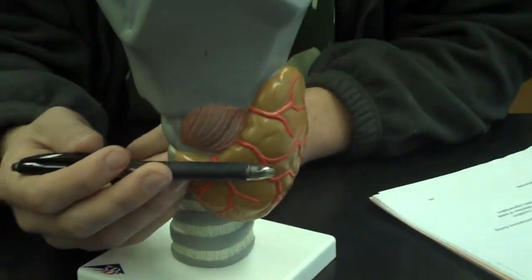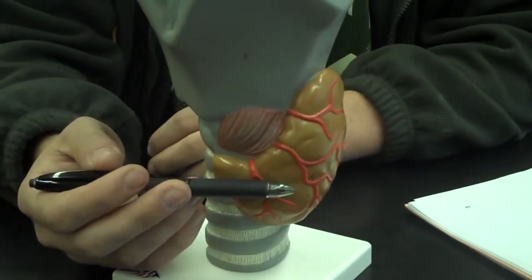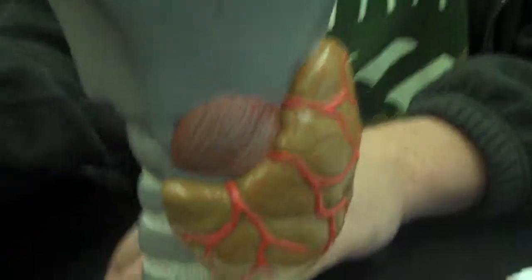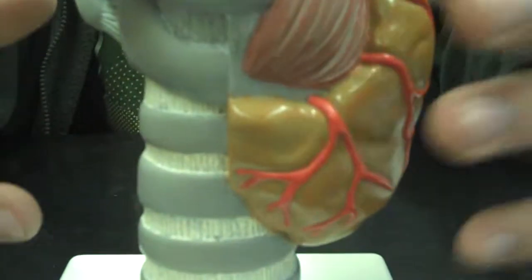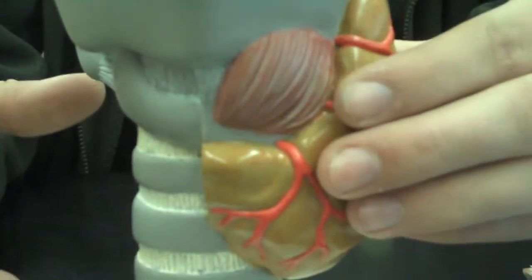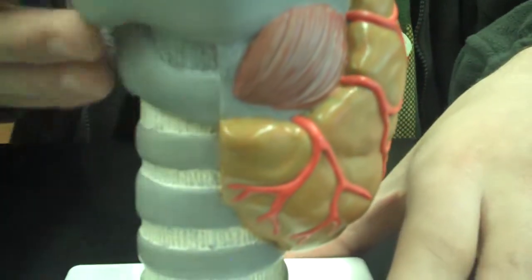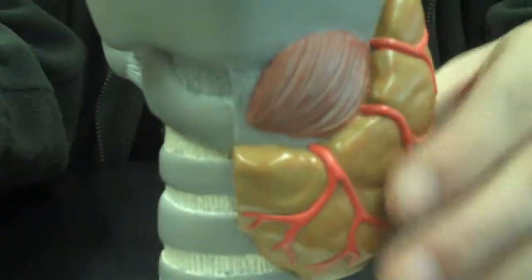Two things you need to know about the thyroid gland. The first thing is the lobes. As you can see here, it's only on one side. It should be on both. And each of these sides is a lobe of the thyroid. So the left lobe and the right lobe is missing so you can see the cutaway here. So this is the left lobe.